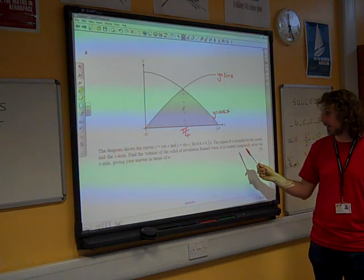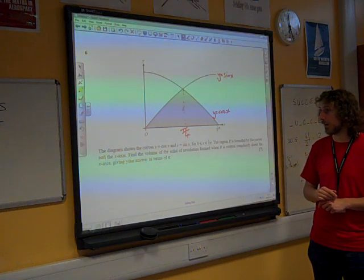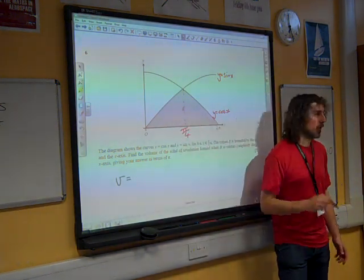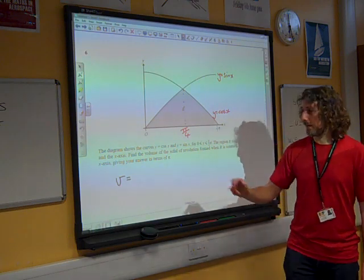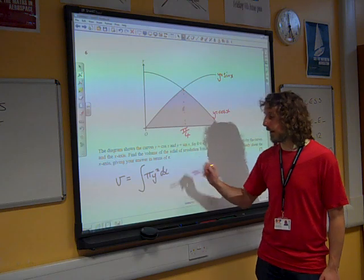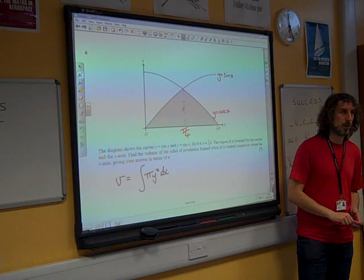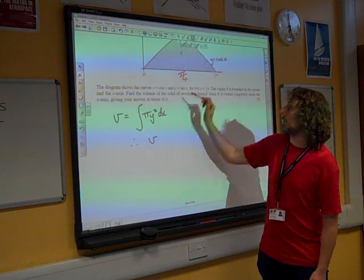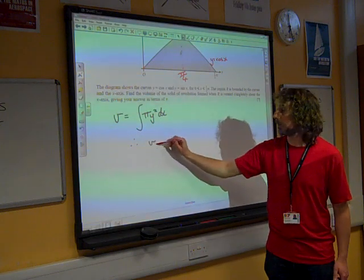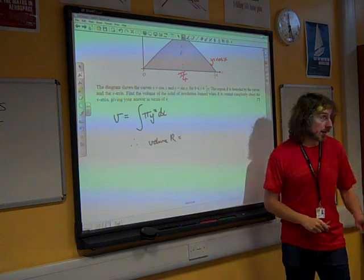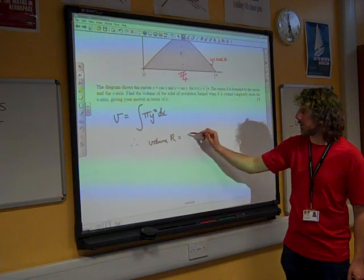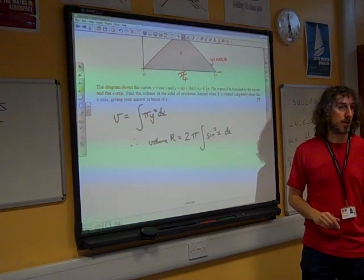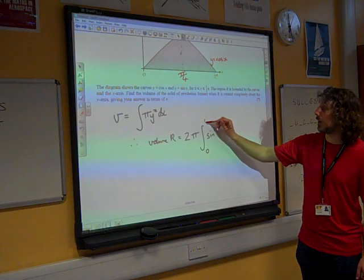Now it didn't ask us to find the area of it, it just asked us to find the volume of the solid formed when R is rotated. So volumes of revolution, remember from core 3, it's the integral of pi y squared dx in the range that we're looking for. So let's work out what we want. So our volume is R. The volume of R is, now I'm going to double this because I'm doing just half of it.